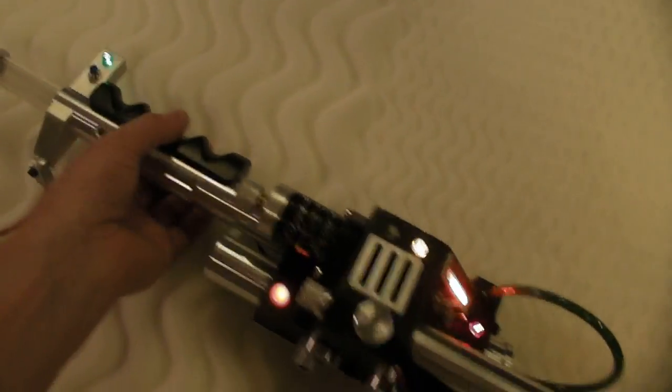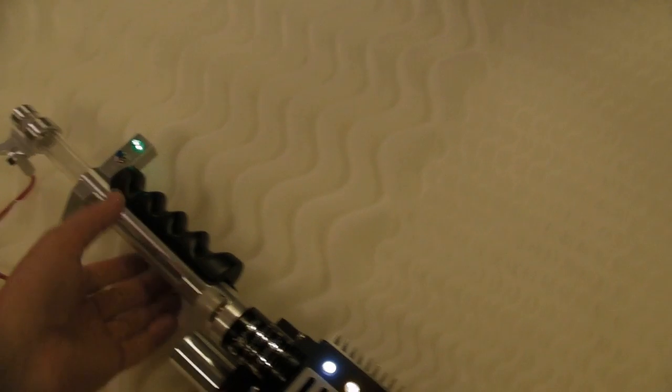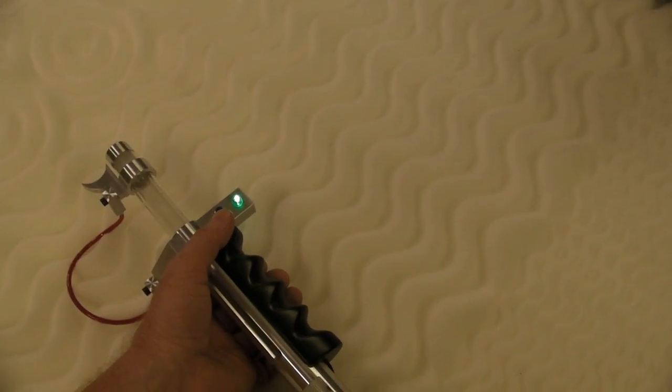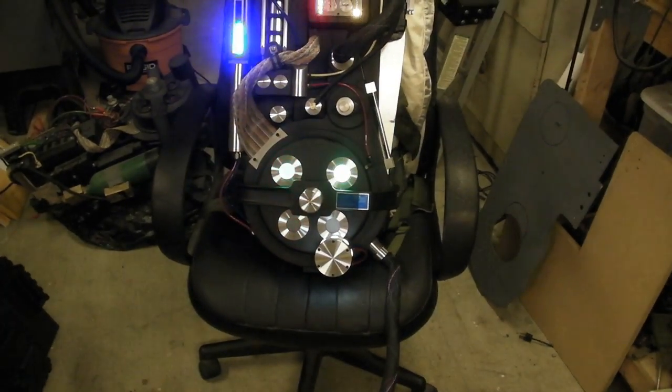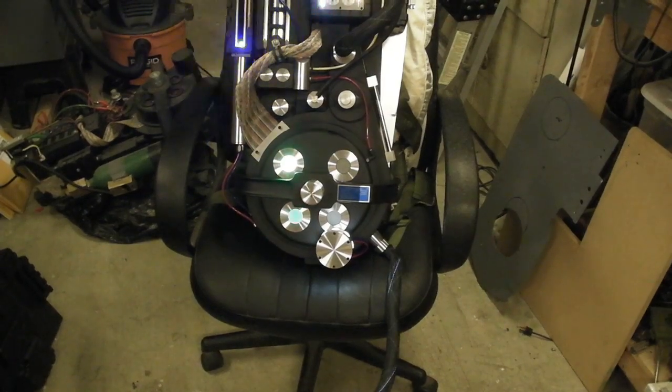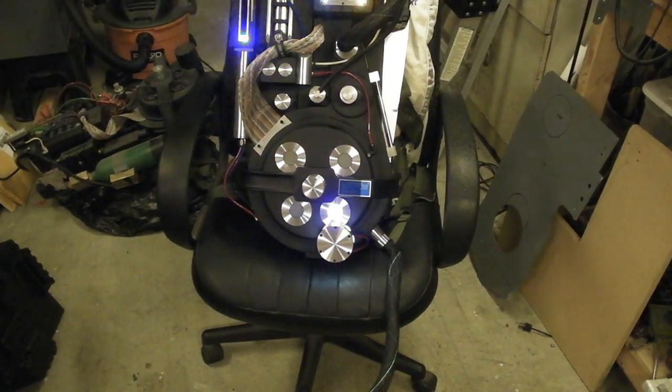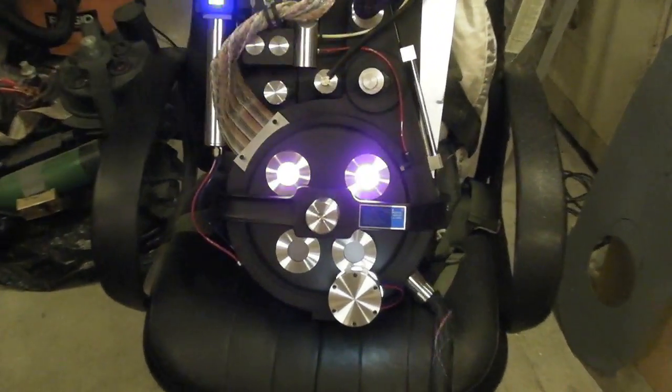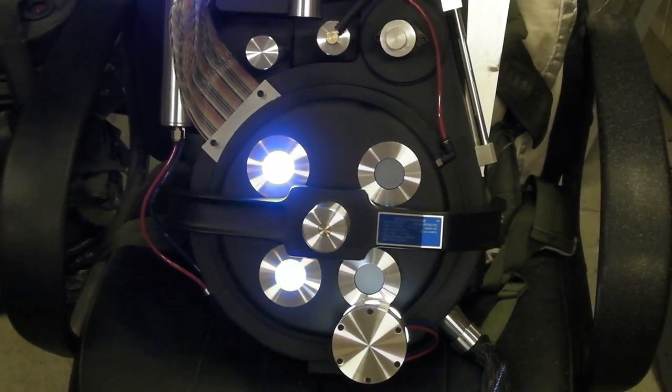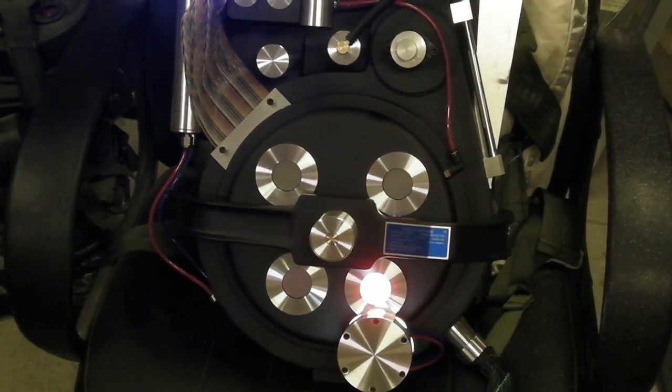Now the functionality of the buttons on the gun is, this front button is used to control the colors of the cyclotron lights. By the time you press it, it changes to a different color. It'll do a total of seven colors. It'll go through all of them.